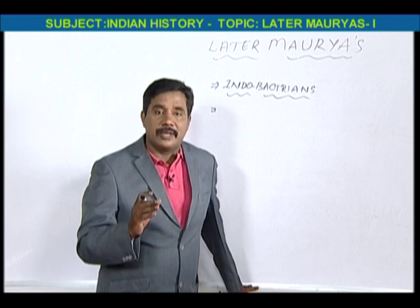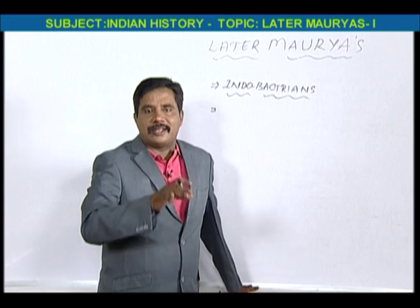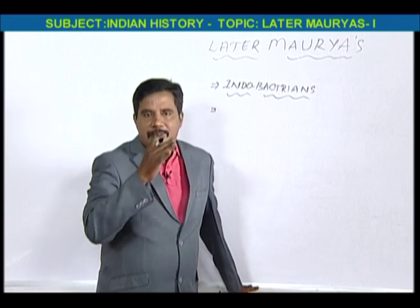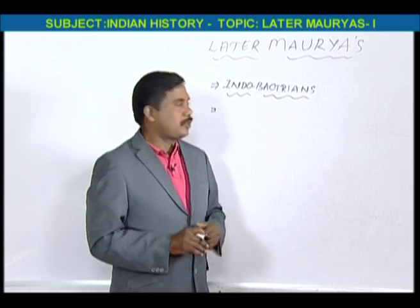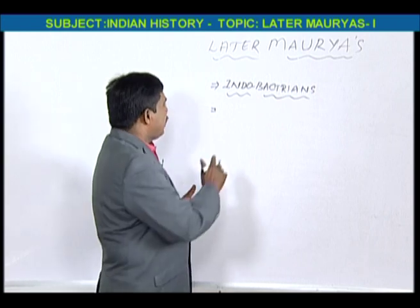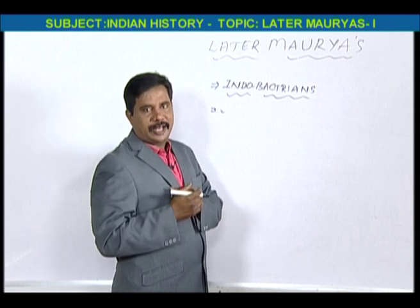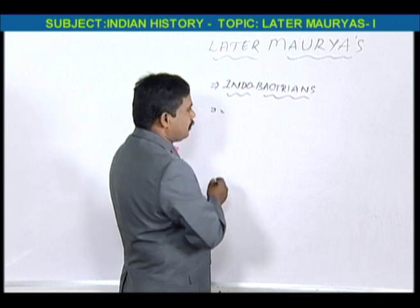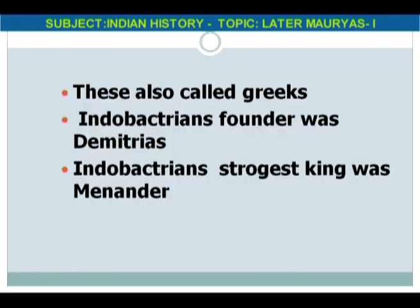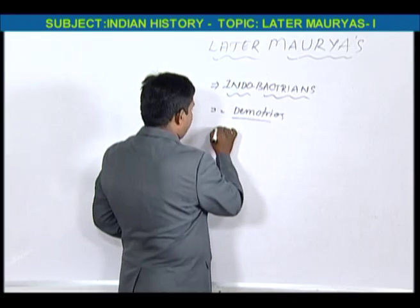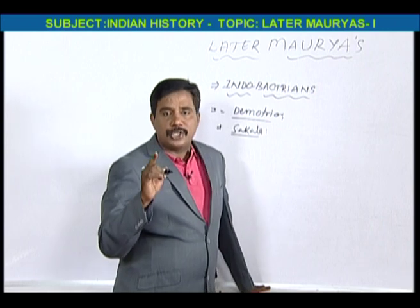The Indo-Bactrians are also called Indo-Greeks. Greeks once settled in Bactria, and from Bactria they attacked India — that is why they are called Indobactrians. The Indo-Bactrian kingdom founder was Demetrius, and his capital was Shakala, also called Sialkot, which is in Pakistan.